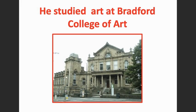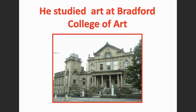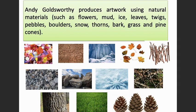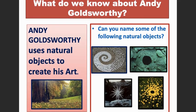He studied art at the Bradford College of Art, just like Miss Tate went to college for art. When Andy is doing work, he produces artwork using natural materials such as flowers, mud, ice, leaves, twigs, pebbles, boulders — which is another word for giant rock — snow, thorns like you would find on a rose, bark like from a tree, grass, and pine cones. Many of these things you could very easily find in the St. Louis area, especially if you live near a park or an area with trees, or you could always go to Forest Park. So this is what we know about Andy Goldsworthy: he loves to use natural objects — things he finds outside — to create his artwork.